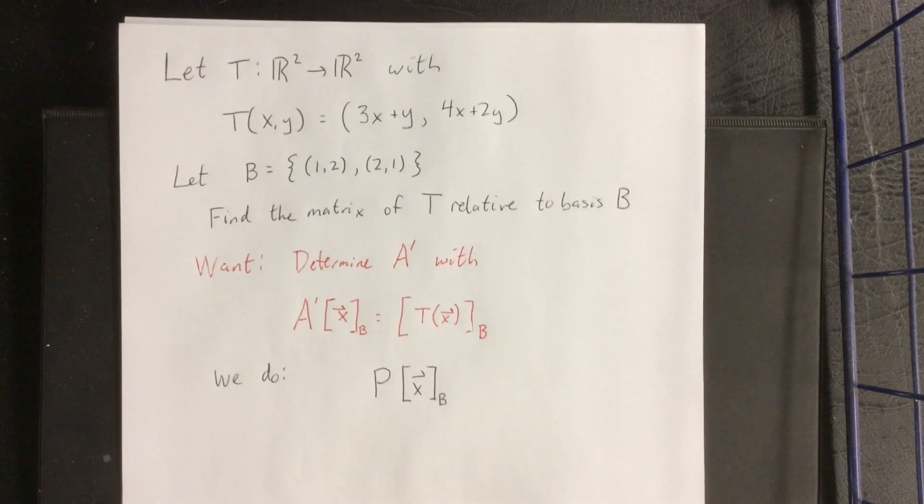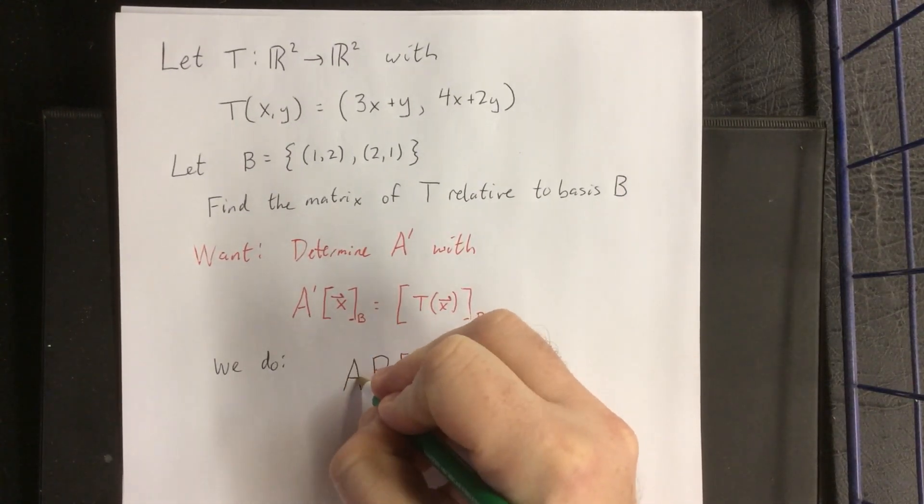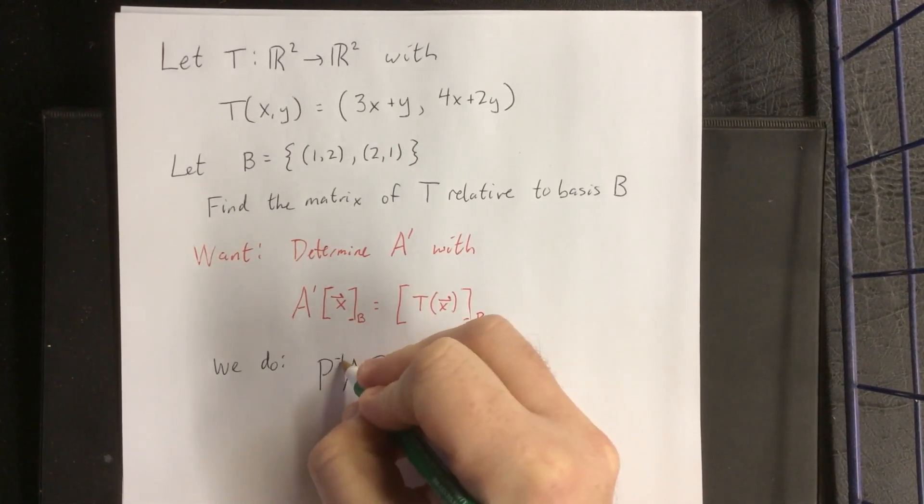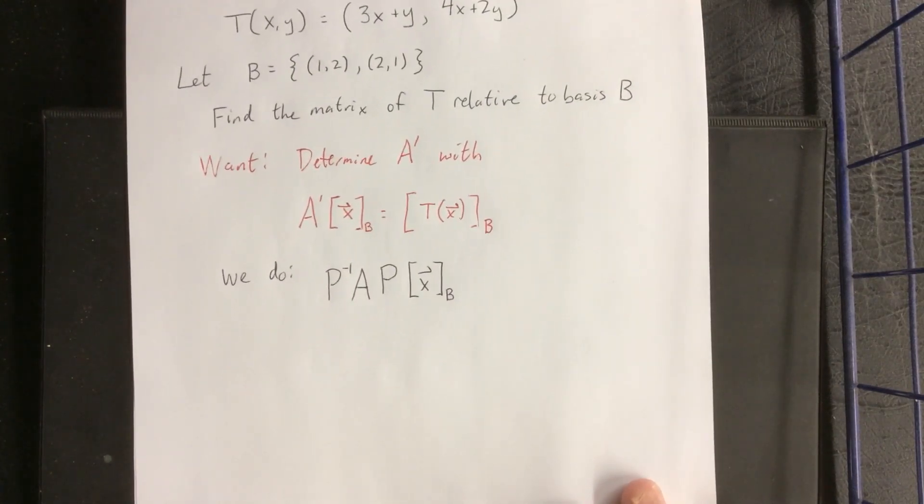Then we're going to send it through the transformation T, that is to say multiply it by the matrix A. And then multiply that by the matrix P inverse to transition it back to our non-standard basis.